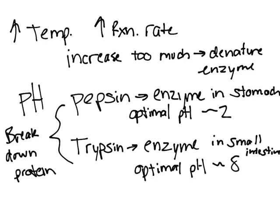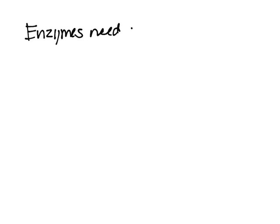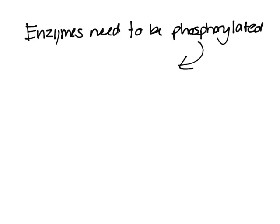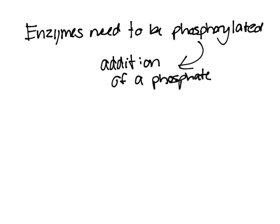An enzyme breaking down protein is not always desirable — you only want to activate it at certain times. So what the body does is enzymes need to be phosphorylated to be activated. That means the addition of a phosphate group by a kinase, which is something that phosphorylates and activates enzymes.